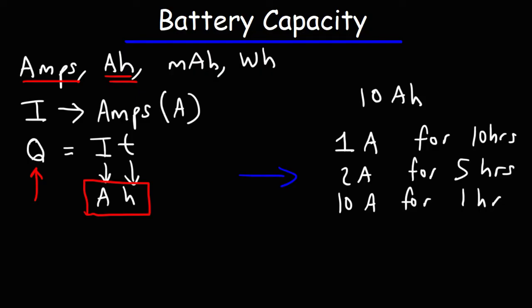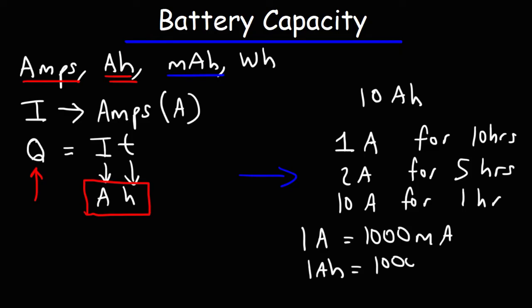What about milliamp hours? We know that 1 amp is equal to 1,000 milliamps. So 1 amp hour is equal to 1,000 milliamp hours. Both of these units represent charge capacity, because you're multiplying the current in amps or milliamps times the time in hours.